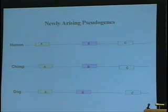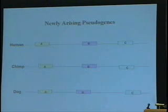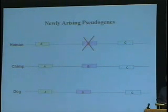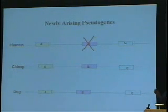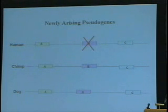But occasionally — and now we have the genome sequences, we can look and see how often this happens — you have a situation where you find the same order of genes in dog, chimp, and human, but when you look very carefully at that middle gene, it's a pseudogene. It has, if you look at molecular clock arguments, recently encountered an inactivating mutation that has rendered it no longer functional.